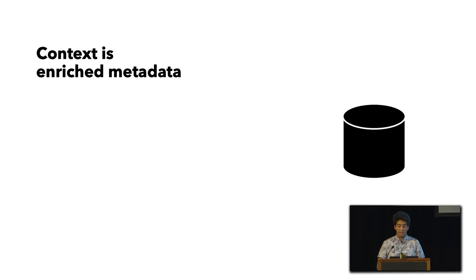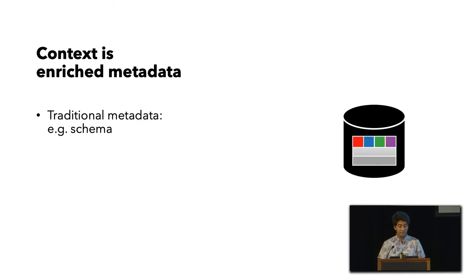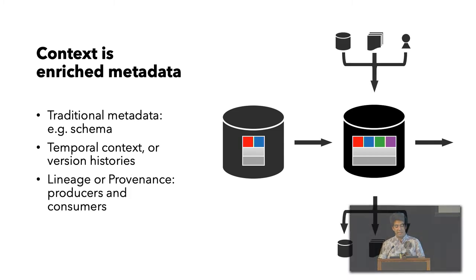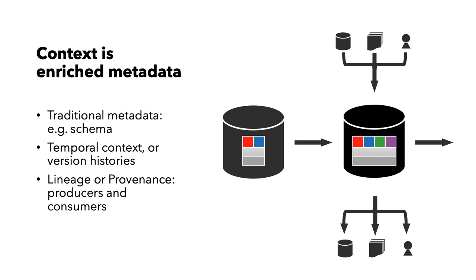Context is just enriched metadata. For a data set, context includes traditional metadata like schema, number of columns, and column domains. We also consider temporal context — what did the data set, models, and other artifacts look like in the past? For each point in time, what is the lineage or provenance — who are the producers and who are the consumers? If you are the producer of a model or maintainer of a data set and you identify a defect or update a new version, it would be very constructive to contact the consumers. Debugging means having the ability to leverage this kind of context.